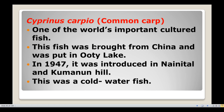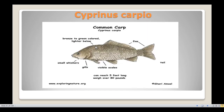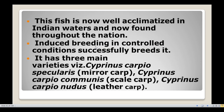This fish was brought from China and was introduced into Ooty Lake. In 1947, it was introduced in Nainital and Kumaon Hills. It is a cold water fish. The Cyprinus carpio fish is now well acclimatized in Indian waters and is found throughout the nation.